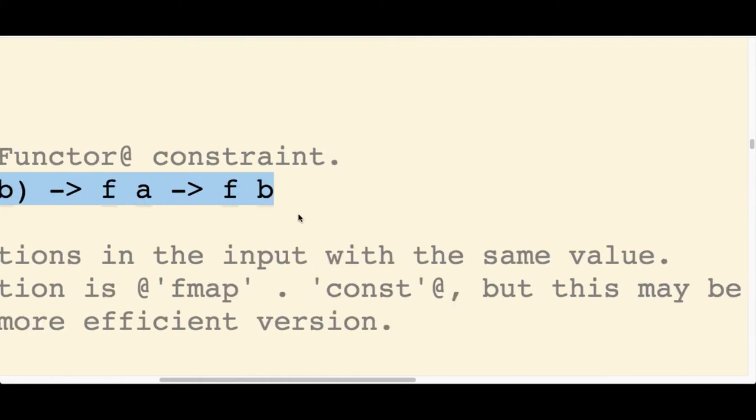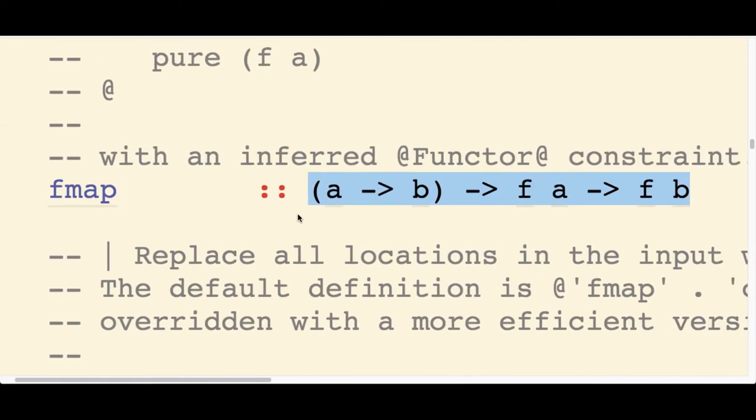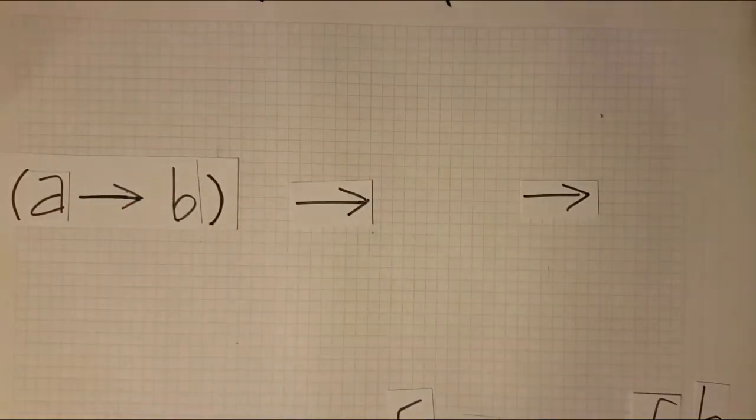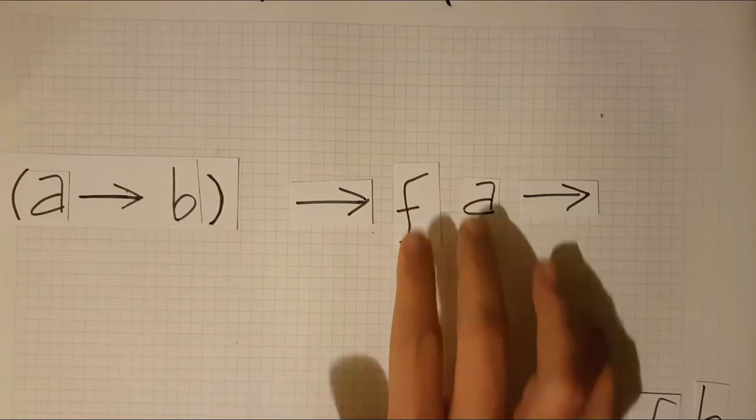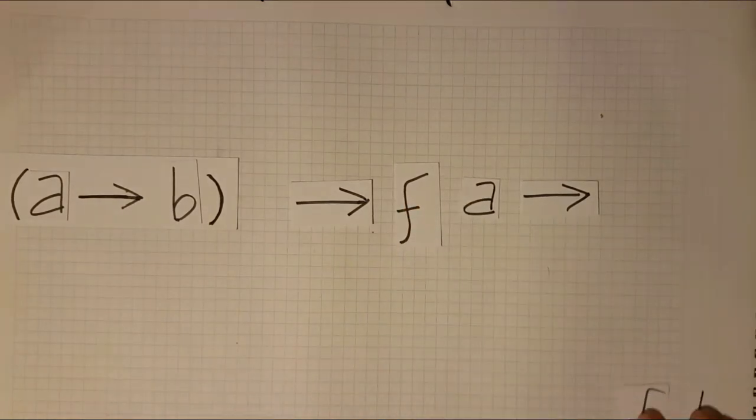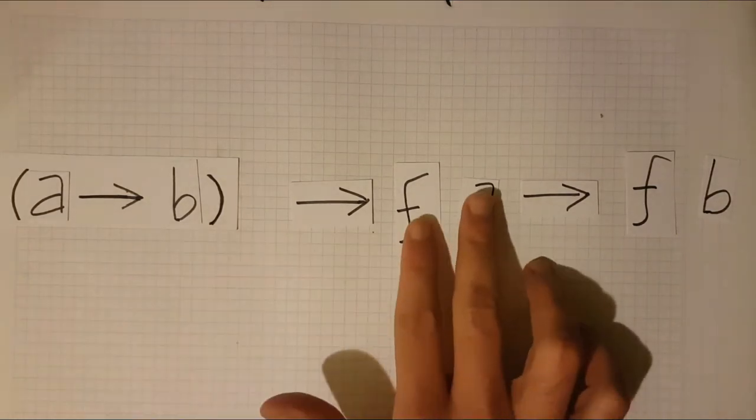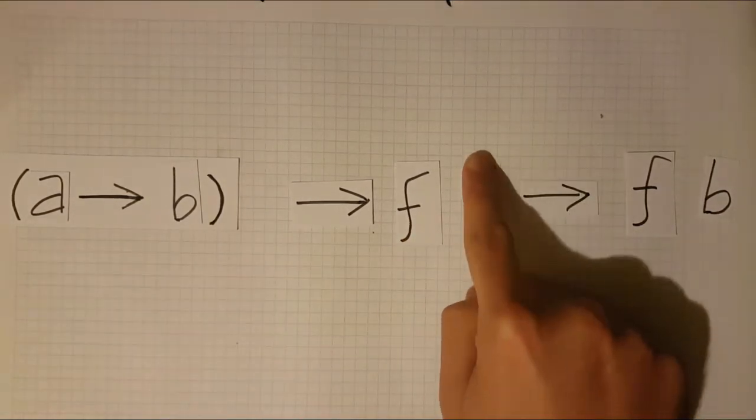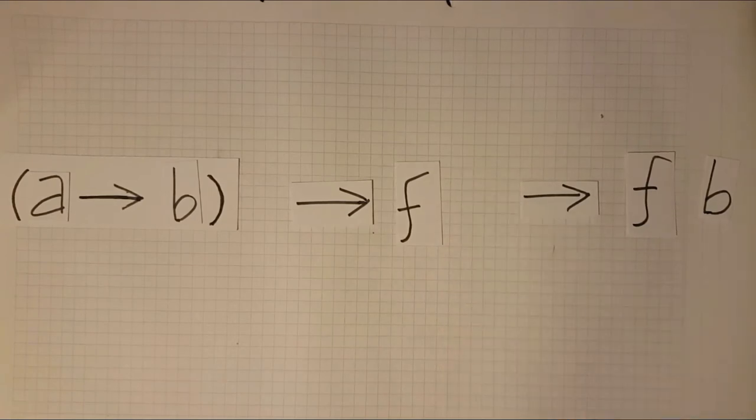You look at this and you say, okay, what do we have here? A function from A to B, I'm also given a structure of A, and I have to return a structure of B. So you look at the structure of A, and you say, I'm gonna grab the A. So you grab the A. So now you have an A. Great.